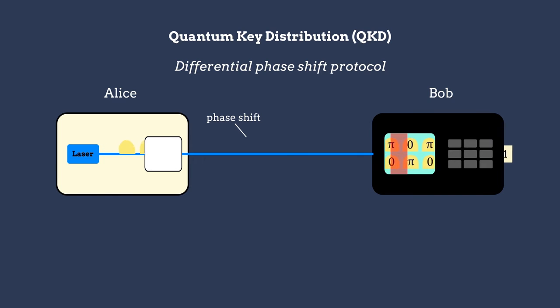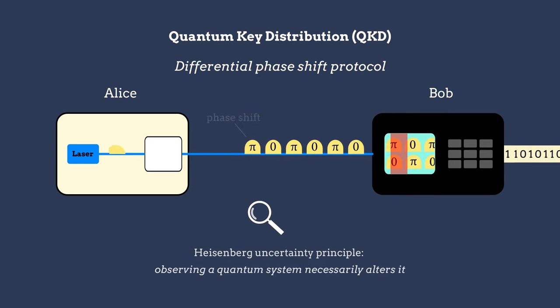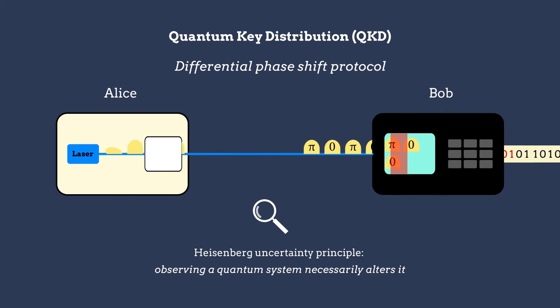One of the main advantages of quantum key distribution over classical encryption methods is that it operates based on the Heisenberg uncertainty principle, which states that observing a quantum system necessarily alters it. This allows QKD to indicate whether an outside observer Eve is trying to intercept Alice and Bob's key.